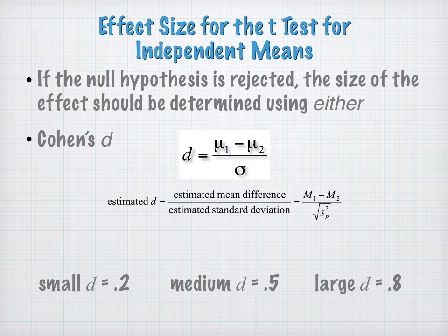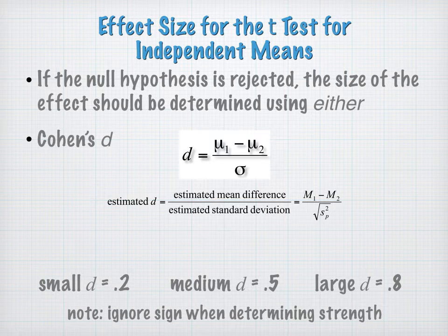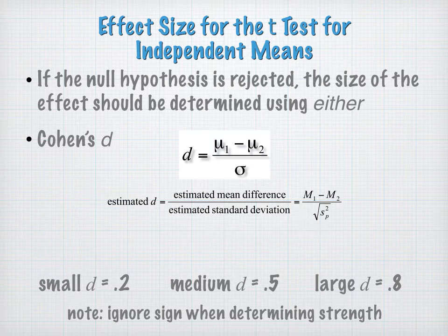We have magnitude thresholds: if we're at 0.2, we have a small effect; if we're at 0.5, we have a medium effect; and if we're at 0.8, we have a large effect. This is magnitude, so we're going to ignore the sign when determining the strength. So if you have a negative 0.8, that's still a large effect size even with that negative number.